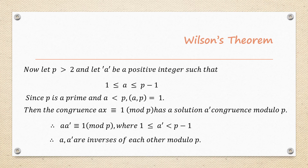Now suppose P is greater than 2. That means P could be 3, 5, 7, or any prime — and every composite number can be written as a product of primes. Let A be a positive integer such that A lies between 1 and P-1, since P is prime.